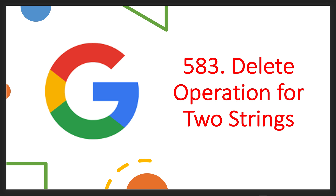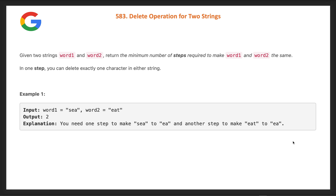Hi everyone, welcome to my channel. Let's solve LeetCode problem 583: Delete Operation for Two Strings. This problem was asked in a Google interview. The problem statement: we are given two strings, word one and word two, and we have to return the minimum number of steps required to make word one and word two the same. In one step you can delete exactly one character in either of the strings.